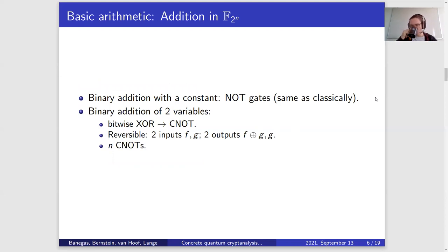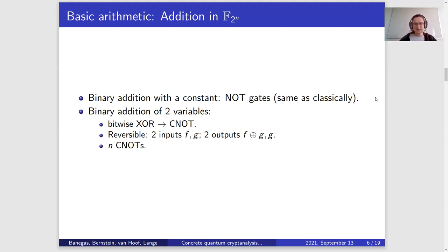Let's go over the actions we need. Addition is a straightforward action. In the simple case, if you add a constant in the binary finite field, you just use NOT gates — the same as the classical case. If you want to add two variables, classically you would use bitwise XOR, but we need to keep one of those inputs around, so we use CNOT. Since we are dealing with up to N bits and qubits, we need N CNOT gates, and we need to keep one input around. We can undo this computation by just repeating it.